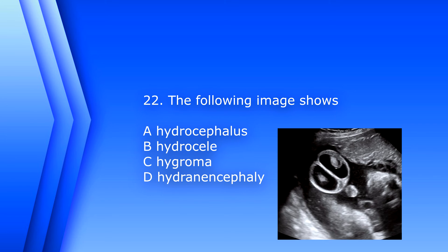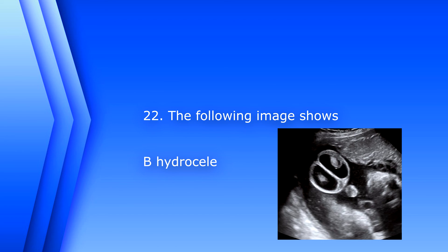Number 22. The following image shows: A. Hydrocephalus. B. Hydrocele. C. Hygroma. Or D. Hydranencephaly. So at first view this image might confuse, and it might look like a young fetal brain with hydrocephalus. But you can see the penis there — so these are the testicles. This is a hydrocele. The answer is B. Hydrocele.